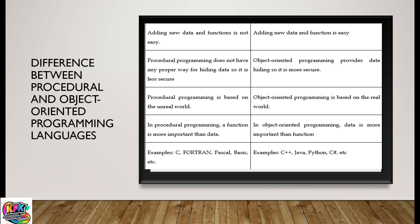Procedural programming is based on the real world, and object-oriented programming is also based on the real world. In procedural programming, a function is more important than data, whereas in object-oriented programming, data is more important than a function.